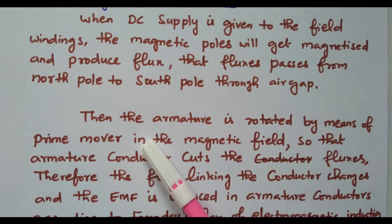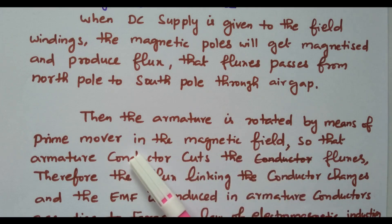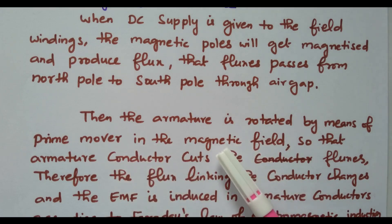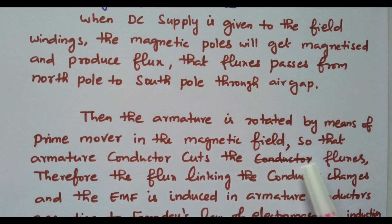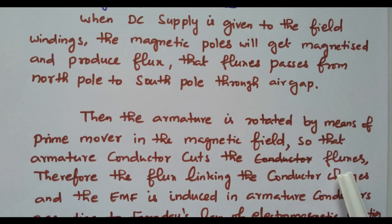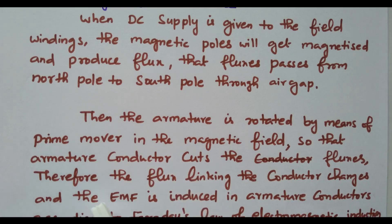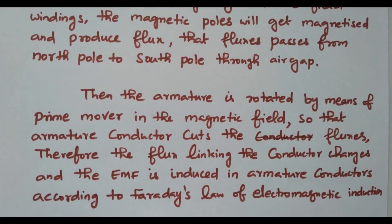The rotating part — the armature — is rotated by means of a prime mover in the magnetic field. The generator takes mechanical energy as input; the rotation is given by the prime mover. By using the prime mover, the armature is rotated, and the armature conductors cut the flux already produced by the field winding. The flux linking the conductor changes and EMF is induced in the armature winding.